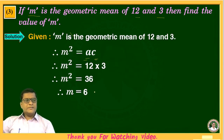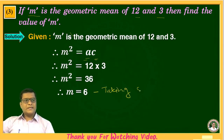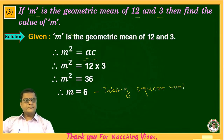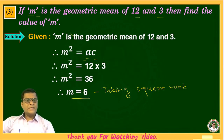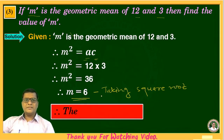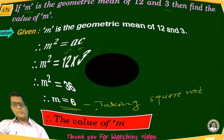Taking the square root of both sides, therefore the value of M is 6. The answer is: the value of M is 6.